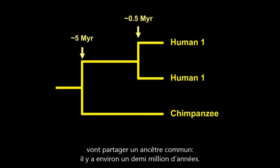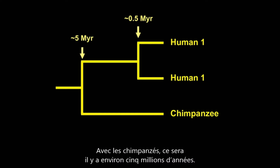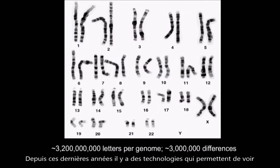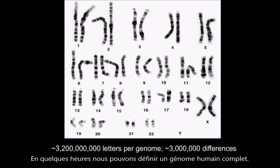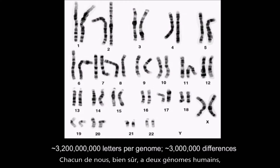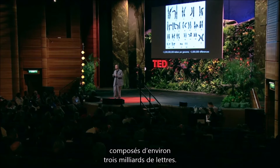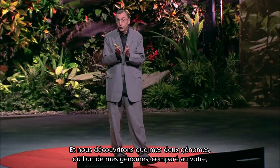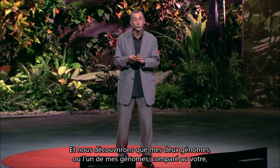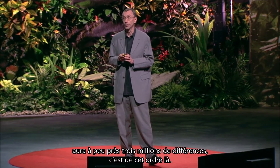Because these mutations happen approximately as a function of time, you can transform these differences into estimates of time. The two humans will typically share a common ancestor about half a million years ago, and with chimpanzees it will be in the order of five million years ago. What has happened in the last few years is that technologies now allow you to see many, many pieces of DNA very quickly. We can now, in a matter of hours, determine a whole human genome. Each of us contains two human genomes — one from our mothers and one from our fathers — and they are around three billion letters long, with about three million differences between them.